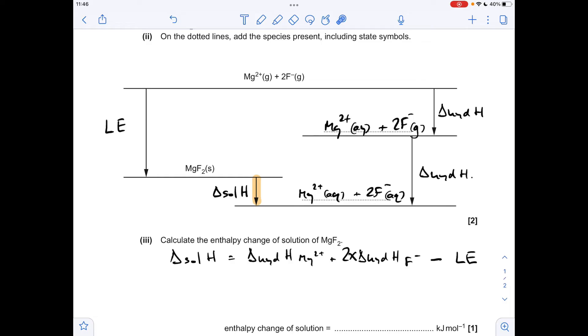Before I put the numbers in, just a reminder that we're going to need to double the hydration enthalpy for the fluoride ion, because in the cycle we have two moles. Obviously the value in the table is per mole. So there's the numbers in. Just be really careful with your signs, and the answer comes out to minus six kilojoules per mole for that enthalpy change of solution.